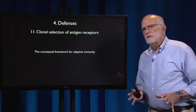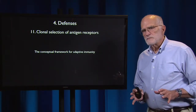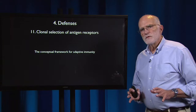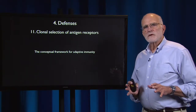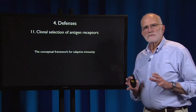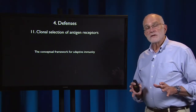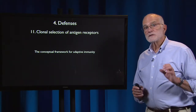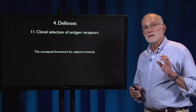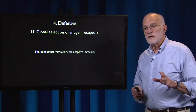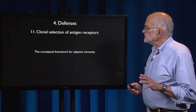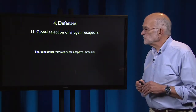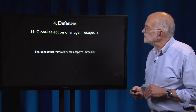The adaptive vertebrate immune system is one of the most amazingly complex products of evolution. At its heart is the process of clonal selection of antigen receptors, which provides the conceptual framework of adaptive immunity.